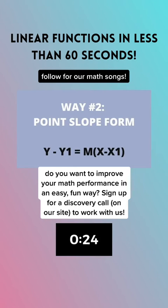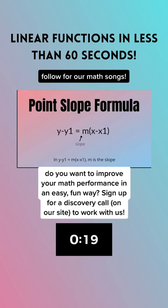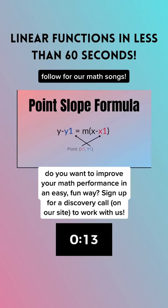Exhibit B: point-slope form. Y minus y1 is m times x minus x1, where m is the slope and x1 comma y1 is a point.